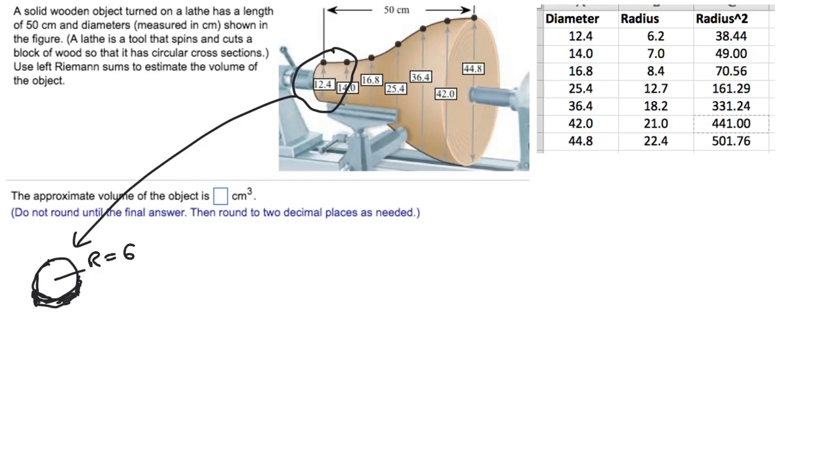Well, that means the radius is 6.2. So radius here is 6.2. These are all in centimeters. And the thickness of this thing, well, the thickness is however far it is between these two dots. Well, they tell me that I've got 50 centimeters here total, and I'm breaking this into six pieces. So the delta x is just 50 over 6, or 25 thirds, is going to be the thickness of each of these slices.